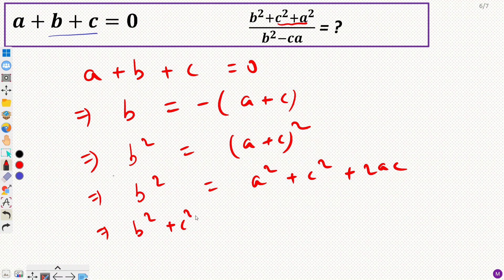B squared plus c squared plus a squared - if I add c squared plus a squared on the right hand side, then this would become 2a squared plus 2c squared. So can I take 2 common? So 2 times a squared plus c squared plus ac.